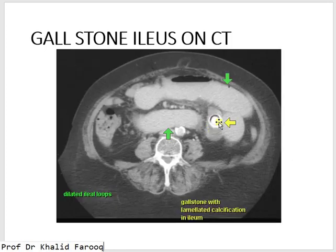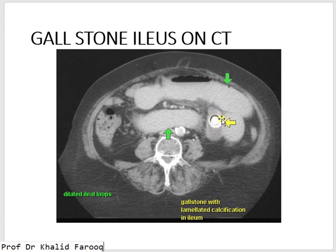This is a gallstone; proximal to the gallstone, the small bowel is dilated. This happens because of a perforated gallbladder — the gallstone causes obstruction of the small intestine when it reaches the terminal ileum. This is an example of gallstone ileus.